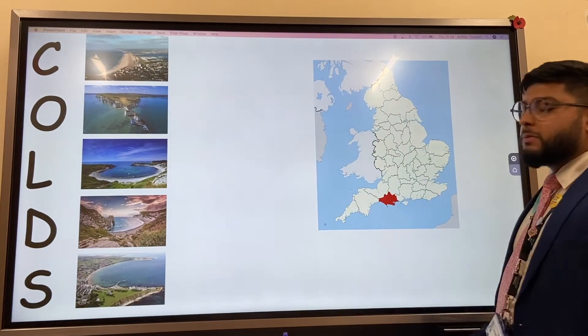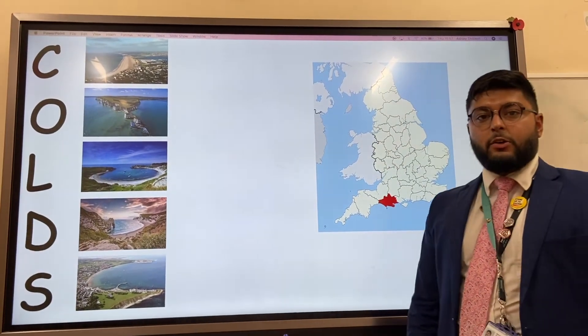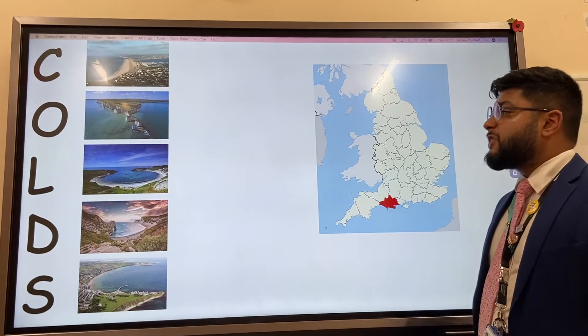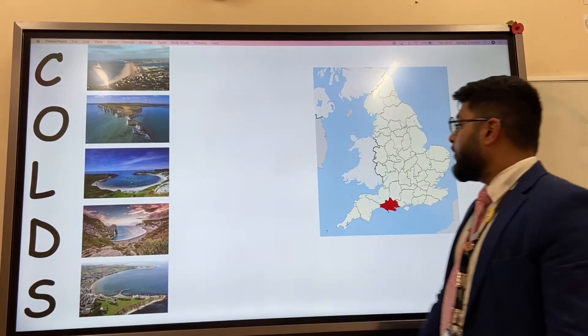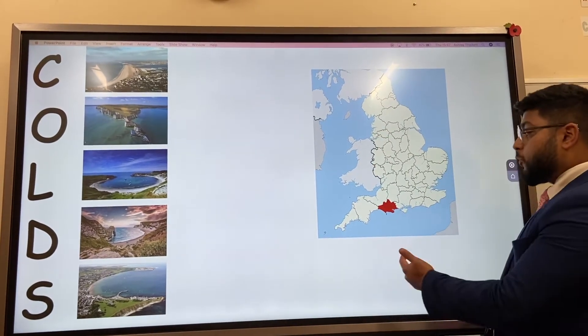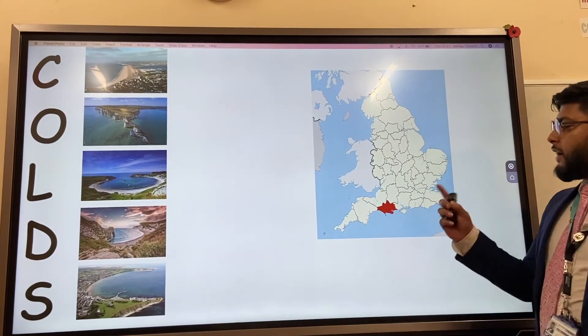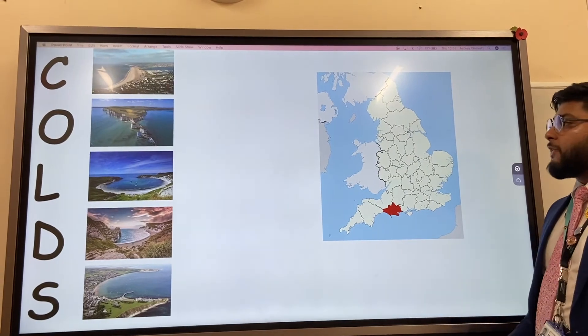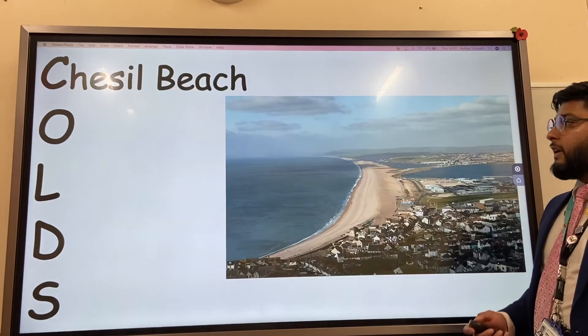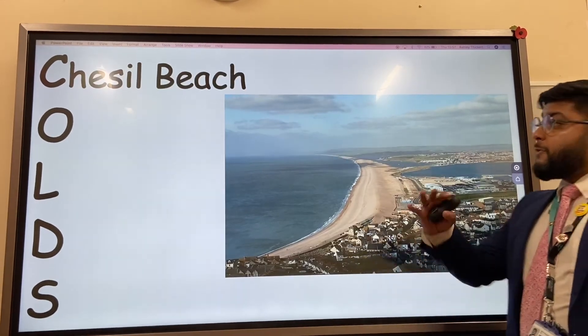So, landforms on the Dorset Coast. The acronym we use to remember them is COLDS, C-O-L-D-S. The Dorset Coastline is on the Jurassic Coast in the south of England.